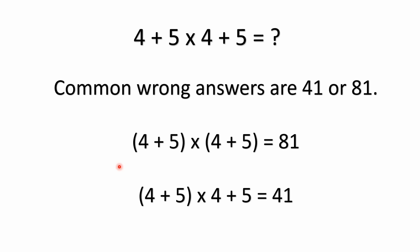A lot of common wrong answers that showed up on forums are 41 or 81. In order to get 81, you'd have to have parentheses around the 4 plus 5 and the 4 plus 5 to make this 9 times 9 equals 81 — but you don't have that. You do not add 4 plus 5 before the multiplication unless you had parentheses. The people getting 41 are just going left to right and ignoring the order of operations: 4 plus 5 is 9, times 4 is 36, plus 5 is 41. But the only way to get 81 or 41 requires parentheses in the problem, and there are none.